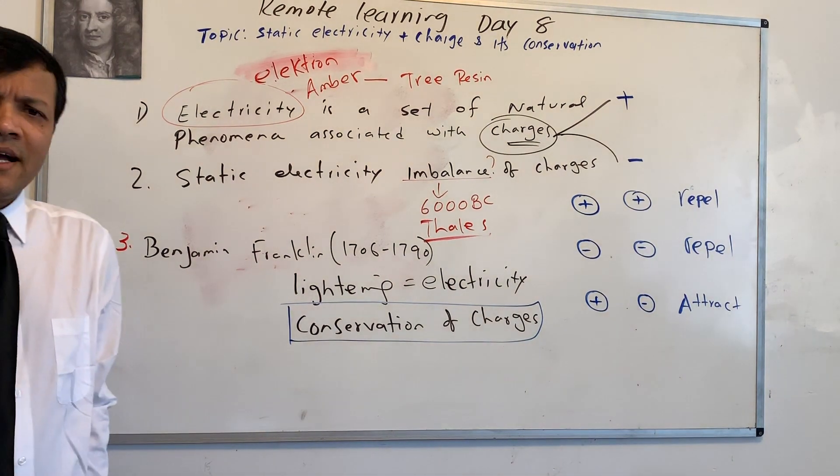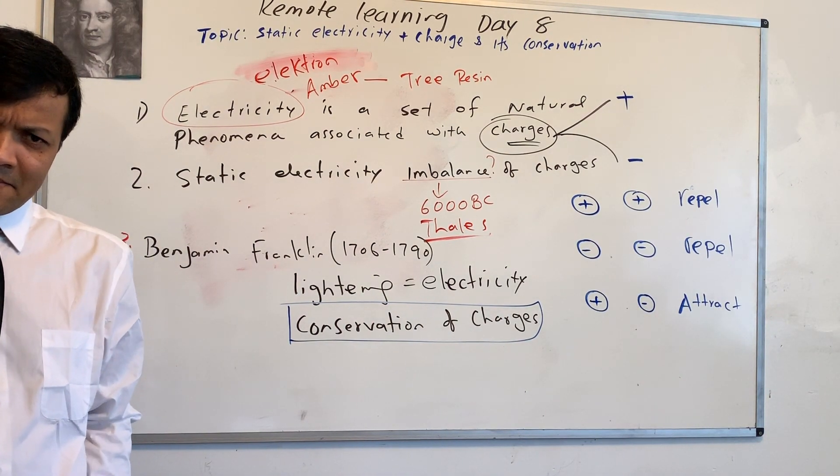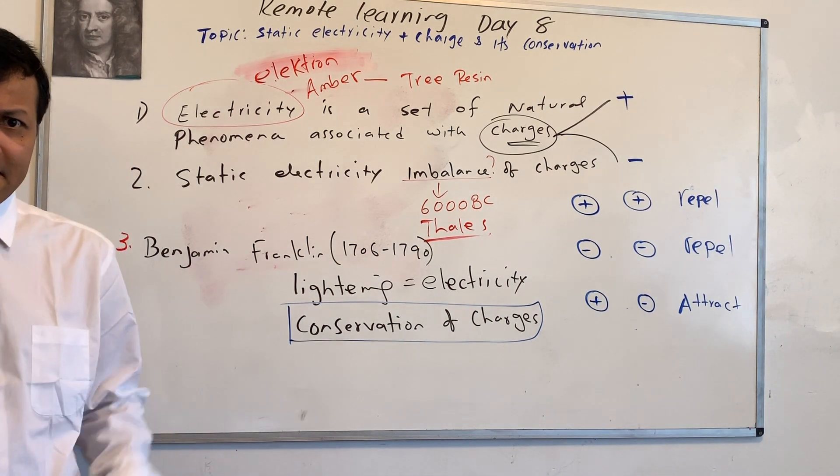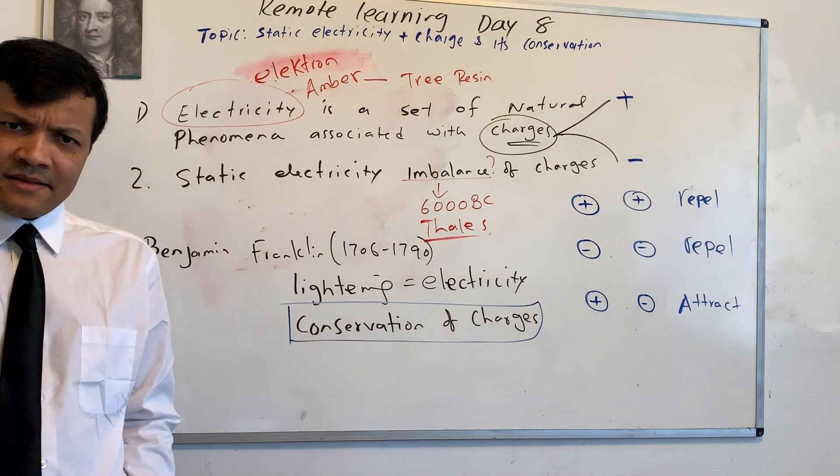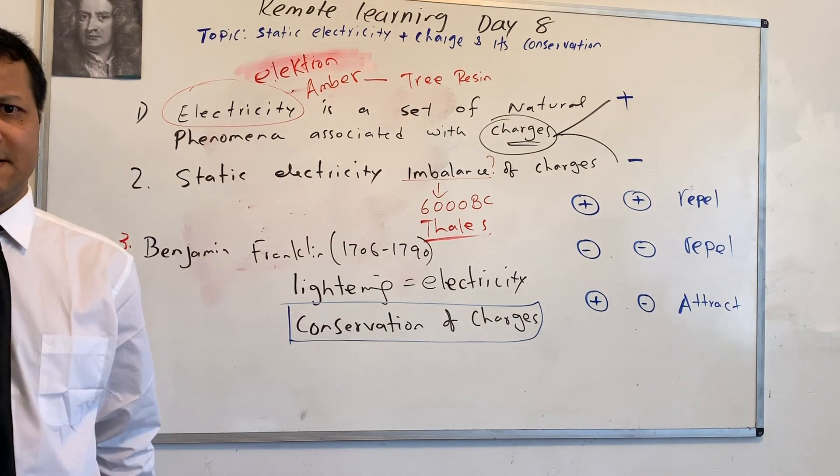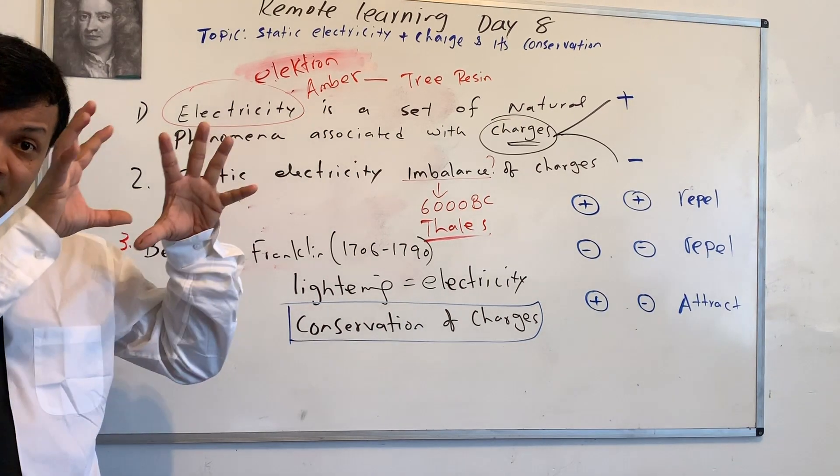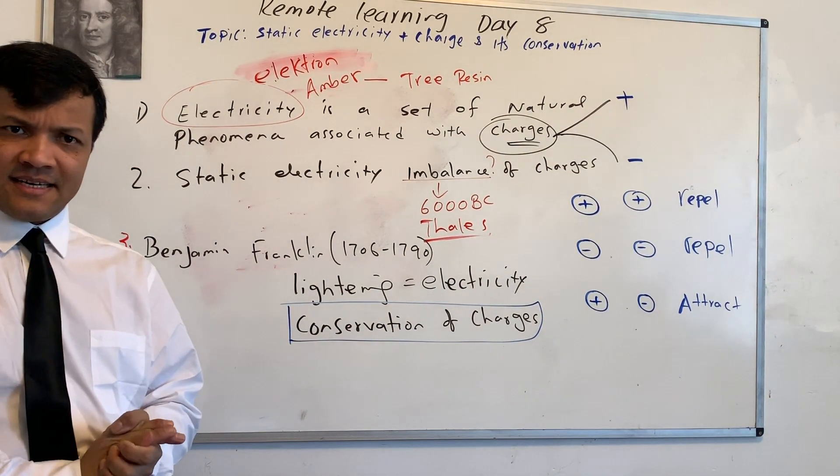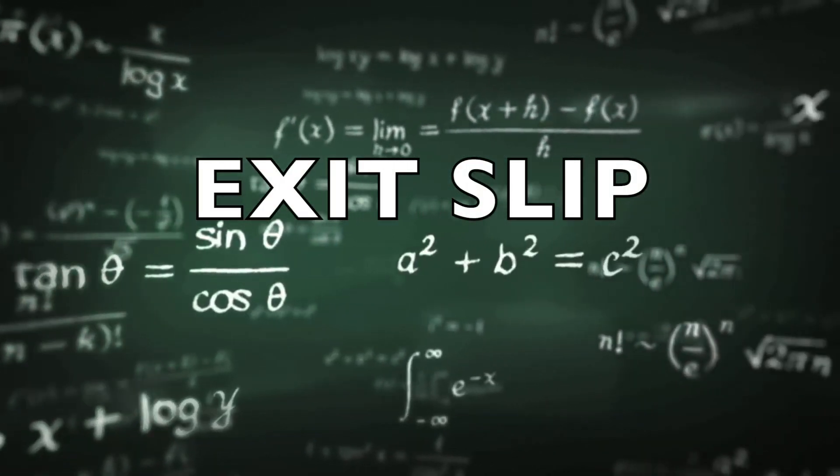Now, what did we learn today? We learned about static electricity and its connection with the electricity. Now, what is the evidence of static electricity? Lightning, for example, is the evidence of static electricity we learned today. And we also learned that Benjamin Franklin was the first person who envisioned that it is possible to harness the power of God to create the light bulb, using the idea of static electricity in the sky. All right, now I'm going to end today's lesson with an exit slip. Let's finish today's remote learning with an exit slip.